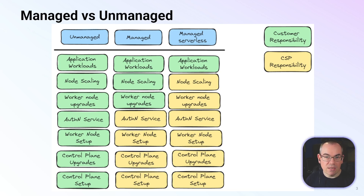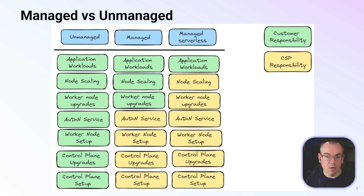We've then got managed Kubernetes distributions — things like Amazon EKS, Google GKE, or Microsoft AKS — where a lot of that is handled for you. Specifically, the management of the control plane is handled for you, so you don't have to worry about exactly how to configure those components, but there are also going to be limited opportunities to configure them, so you are somewhat restricted in what you can do.